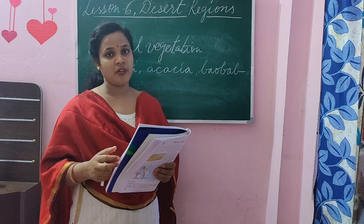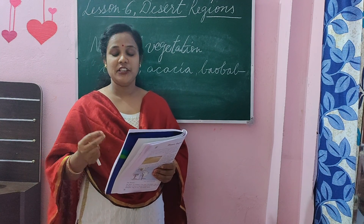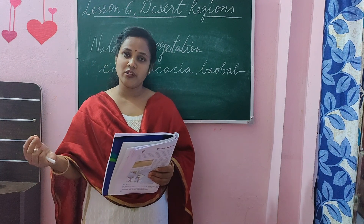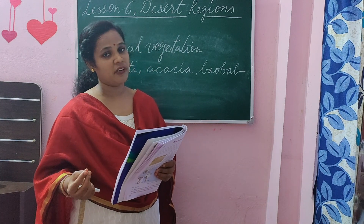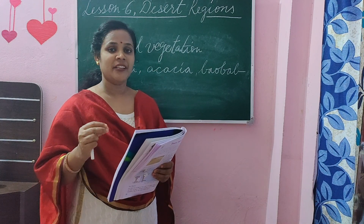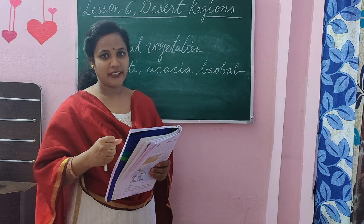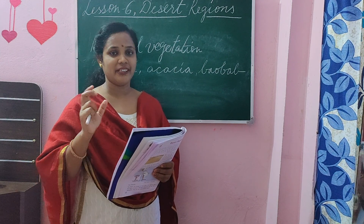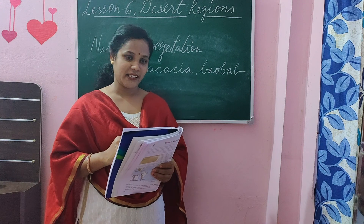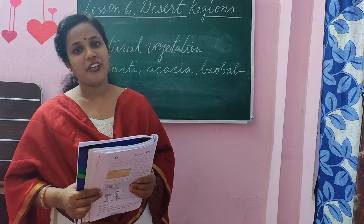The climate of desert regions is extreme — either it is too hot or too cold. During the day it is very hot and during the night it is very cold. The temperature during the day is 40 to 50 degrees Celsius. This much we had learnt in the previous class.